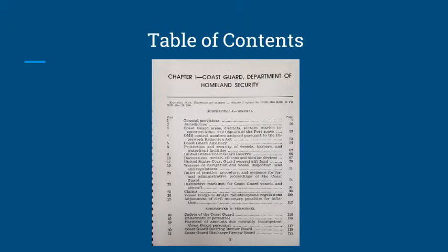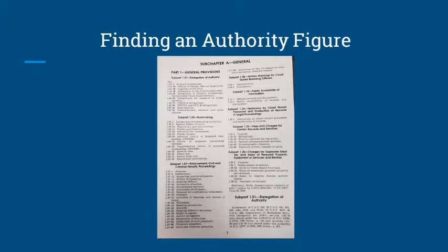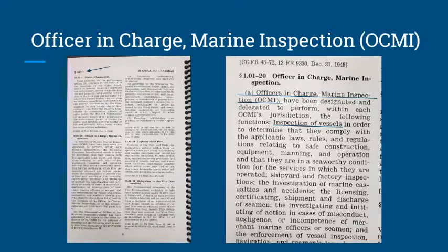Let us start in the Table of Contents, since we know that the individual we are looking for is some sort of authority figure. We can look under the General Provisions part, which is Part 1, and starts on Page 7. On Page 7, we see under Section 1.01-TAC-20 that the section talks about Officer in Charge, Marine Inspection, or OCMI. Sections are typically displayed on the top outer corner of the page and at the beginning of each section. So we can find 1.01-TAC-20 and easily find that the OCMI is charged with Vessel Inspections.